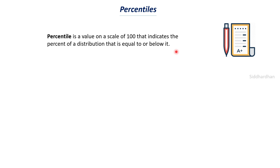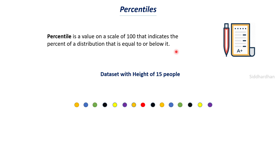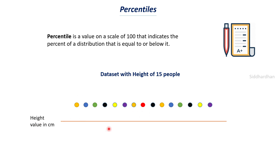Now let's understand this with a more interesting example. Say we have a dataset containing the heights of 15 people. Each circle represents the height of a different person and we have 15 total height values arranged in ascending order — so it is sorted. We have a scale in centimeters; this line represents height in centimeters. The height of the first person is 160 centimeters and the height of the last person is 180 centimeters, so the range is between 160 and 180.